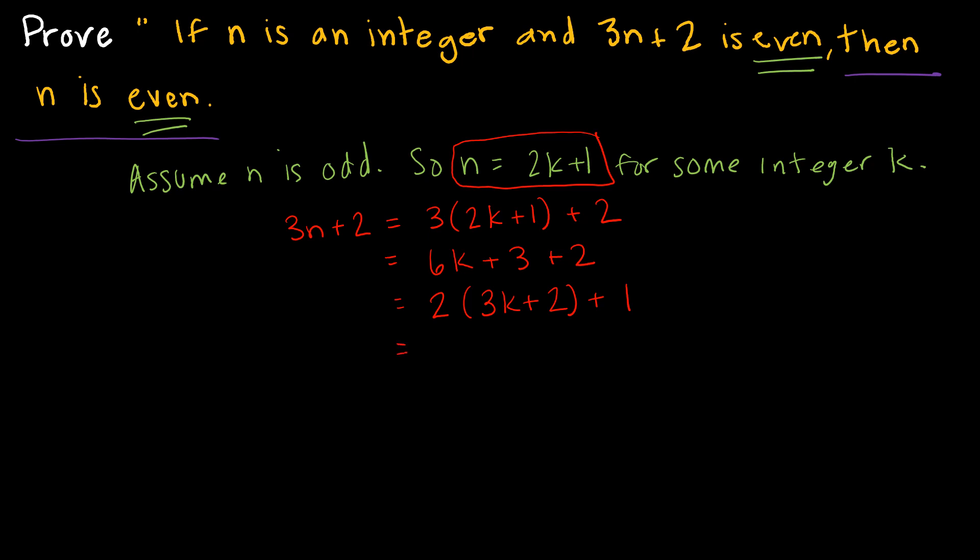Now just as we did before, I can say this is 2R plus 1, where R is 3K plus 2, which just means R is some integer, I'm taking it times 2, and I'm adding 1.